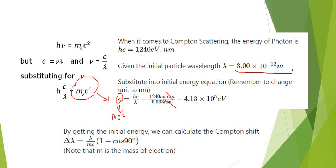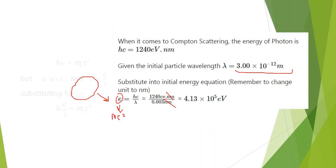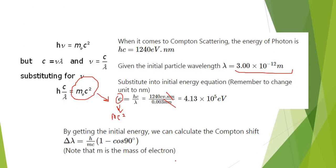And then by getting the initial energy, you can calculate the Compton shift. This is the formula of Compton scattering. We are going to enter this Compton scattering. So delta lambda equals to h over mc, 1 minus cos 90. Cos 90 is 0, so you're left with 1.